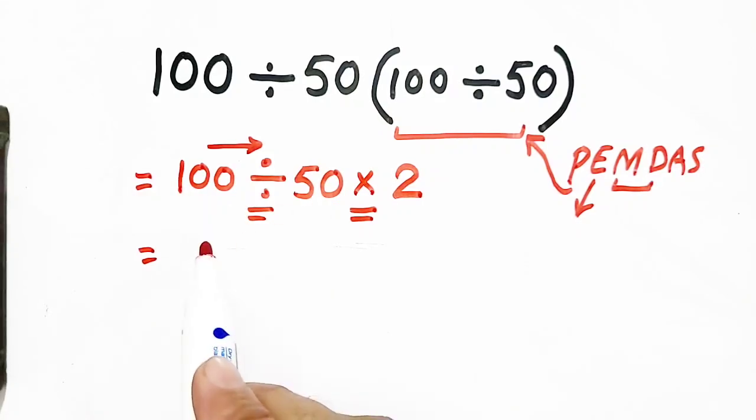100 divided by 50 will be equal to 2 times 2. Now, 2 times 2 will be equal to 4, which will be our answer. Thank you for watching.